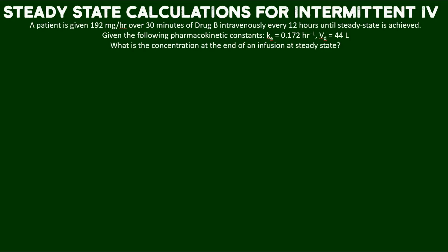Hi everybody, welcome back. In today's problem we're going to go ahead and do a steady state calculation for the dosing scenario of intermittent IV infusions. Here's the case scenario: a patient is given 192 milligrams per hour over 30 minutes of drug B intravenously every 12 hours until steady state is achieved.